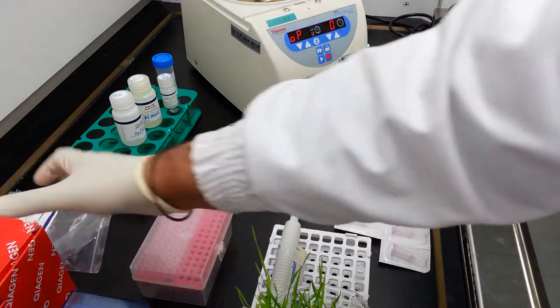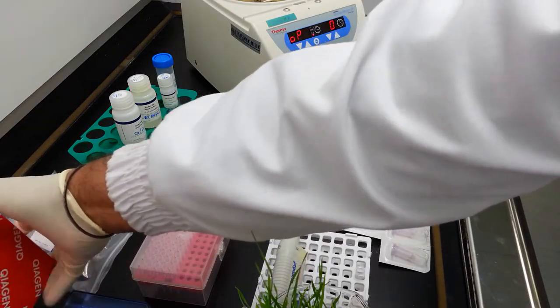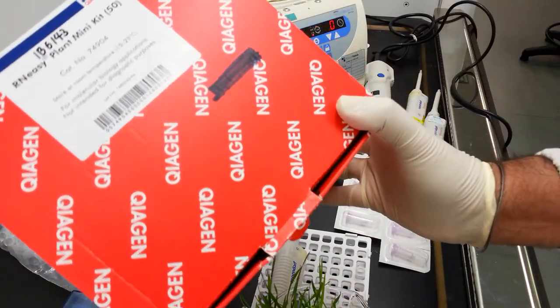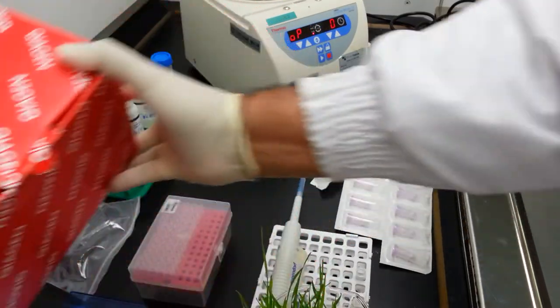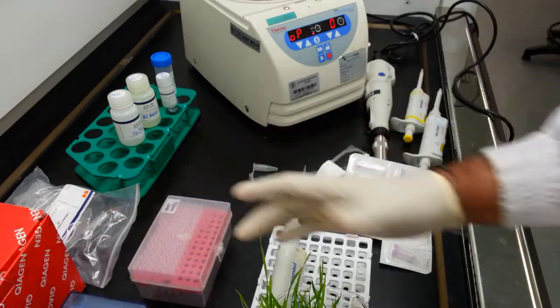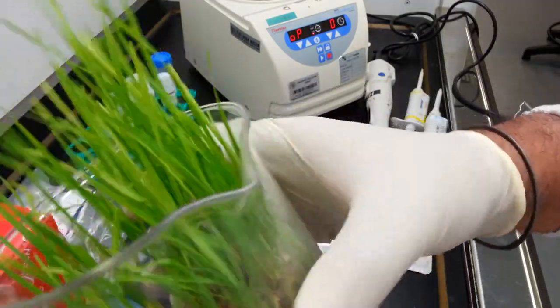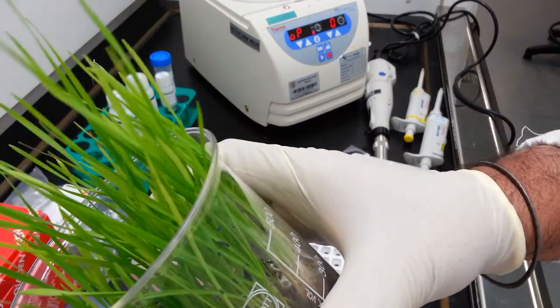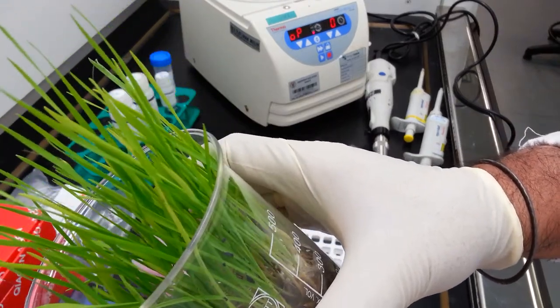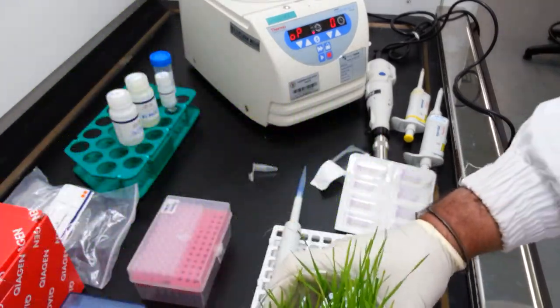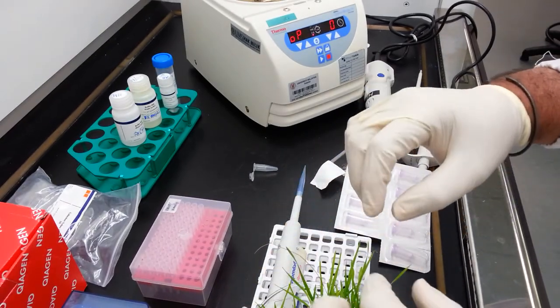Today's laboratory session will focus on the usage of the RNAeasy plant mini-kit for the extraction of RNA from these wheatgrass samples. We have specifically chosen this plant because it yields extremely high amounts of RNA during the germinating phase.